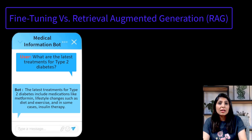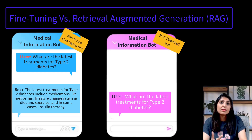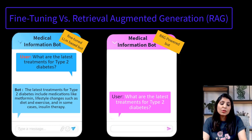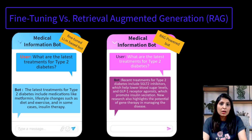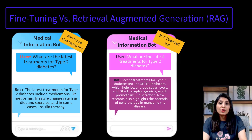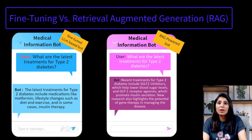For example, when the same question — what are the latest treatments for type 2 diabetes — is asked to this medical chatbot powered by RAG, the LLM will generate a response based on the fresh data provided through RAG. The key benefit of RAG is that you can instantly update the knowledge base by simply uploading a few documents, and it can provide responses based on the latest data without needing to retrain the LLM.